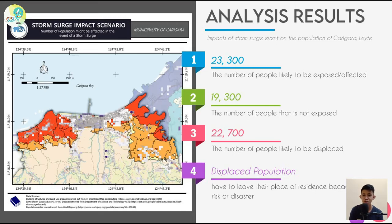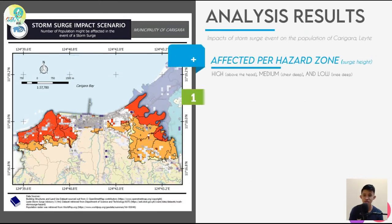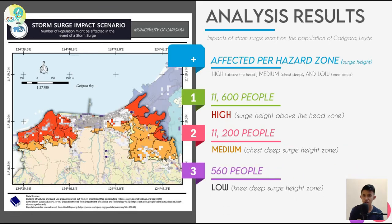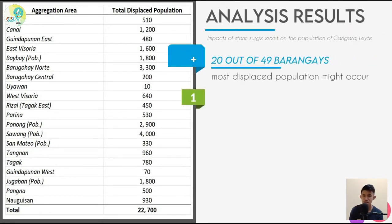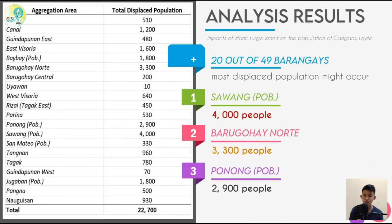The estimated number of people located in the high or surge-height-above-the-head zone had a total population of 11,600. The 11,200 people will be inundated by storm surge with chest-deep surge height in the medium zone, and the low or knee-deep surge height zone has a total population of 560. The results also identified 20 barangays out of 49 as critical areas where the most displaced population might occur. Sawang Publasyon showed the most displaced population with a total of 4,000 people, while Uyawan has the least with 10 people.